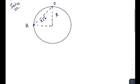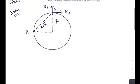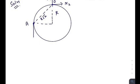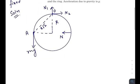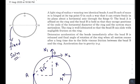Now let's draw the forces acting on this system. There are two hinge forces N1 and N2, there is the weight mg acting downward, and there will also be a normal force acting on the ring due to bead B.